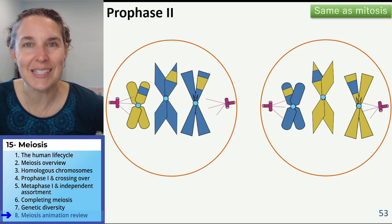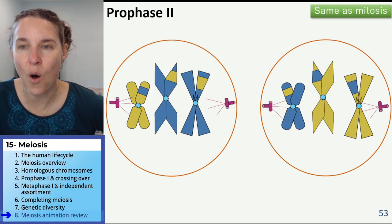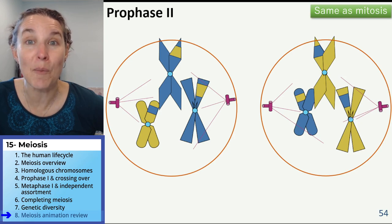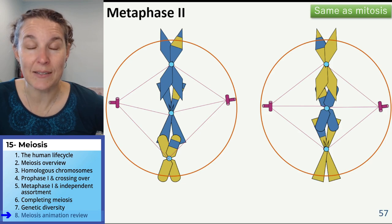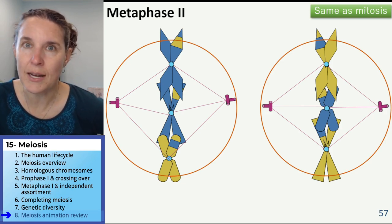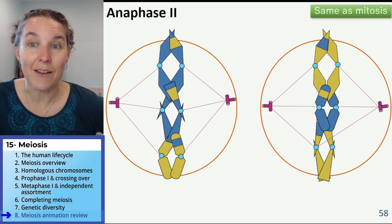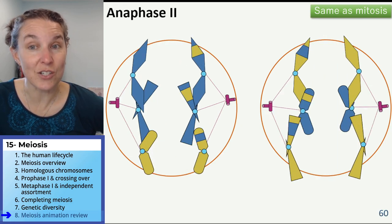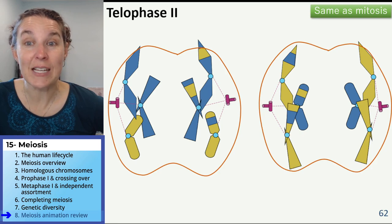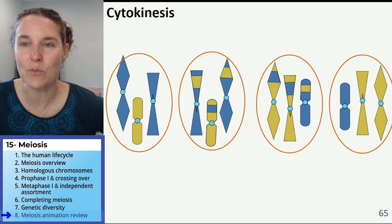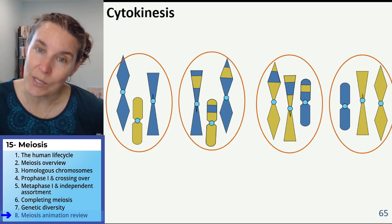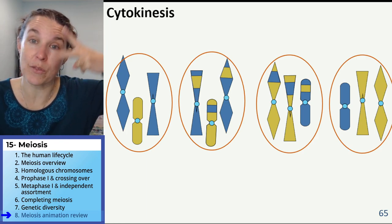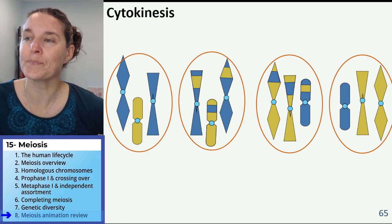Prophase two is the same as mitosis — all we're doing is lining up our sisters on the metaphase plate. Metaphase two: sisters are lined up. Anaphase two: sisters split. Telophase two: sisters are in their poles, and cytokinesis we split the cells. We now have four unique haploid daughter cells because we went through the process twice.